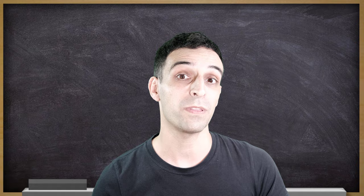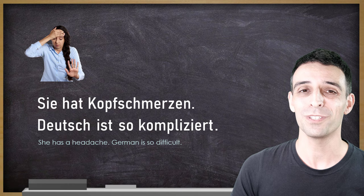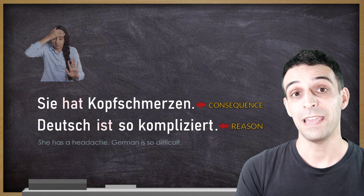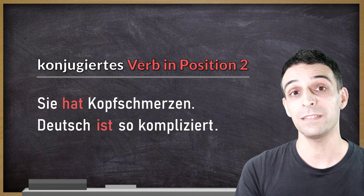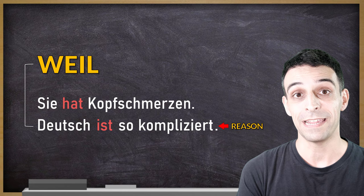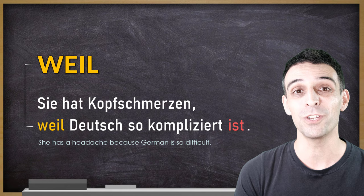Here is the most common sentence structure. Our example: 'Sie hat Kopfschmerzen' — that's the consequence — and 'Deutsch ist so kompliziert' — that's the reason. Both sentences have the conjugated verb in second position; that's called a Hauptsatz, a main clause. Now connecting them with weil: 'Sie hat Kopfschmerzen, weil Deutsch so kompliziert ist.'